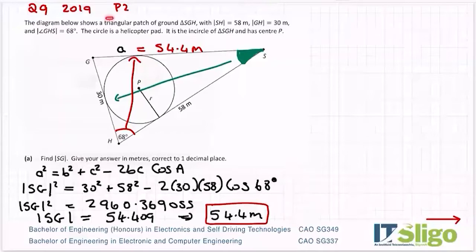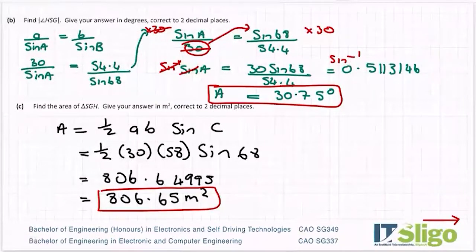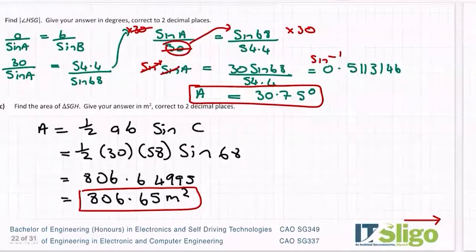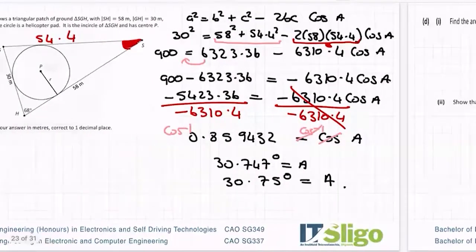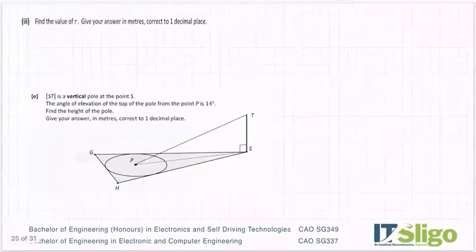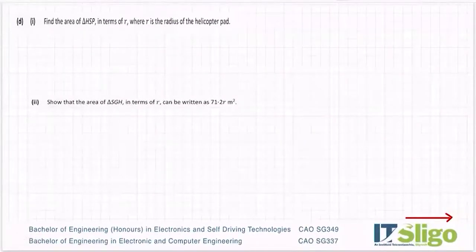Just to give a feel for marks: this was a 55-mark question. Finding SG was worth 10 marks, finding the angle was 10 marks, and finding the area was 15 marks — giving 35 marks from those three parts. The remaining parts were worth 5 marks each.